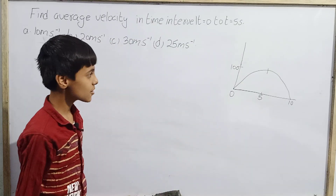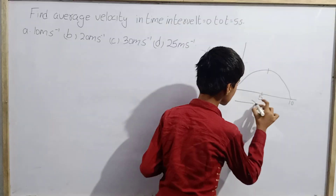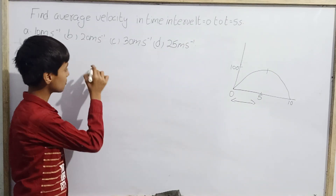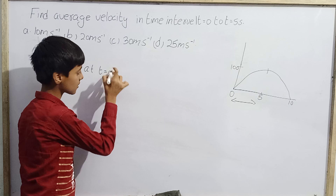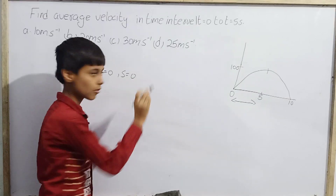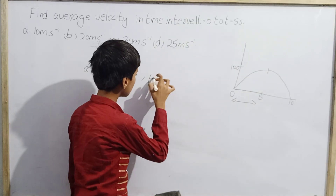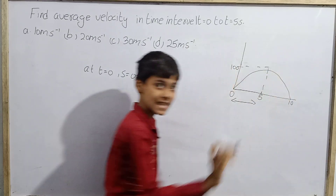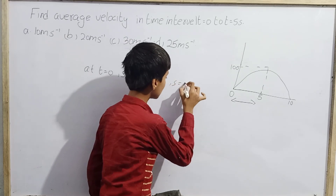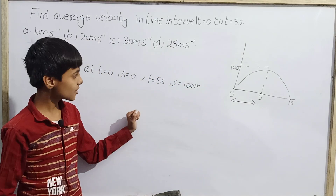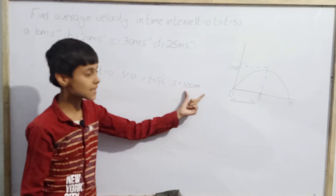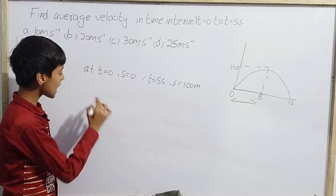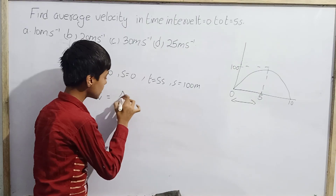From the displacement-time graph, at t = 0 seconds, displacement s = 0. At t = 5 seconds, displacement s = 100 meters. So the particle goes from 0 to 100 meters in 5 seconds.